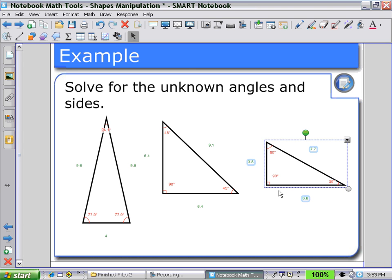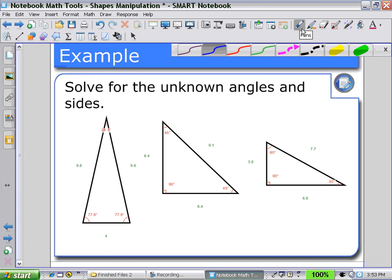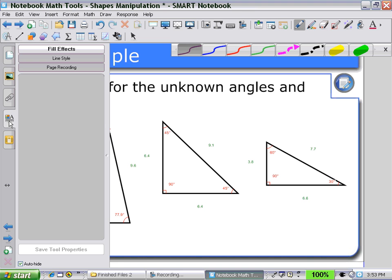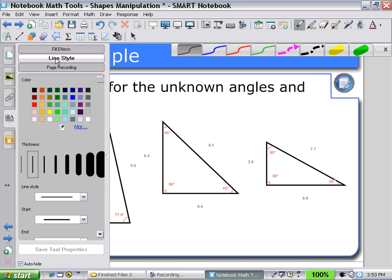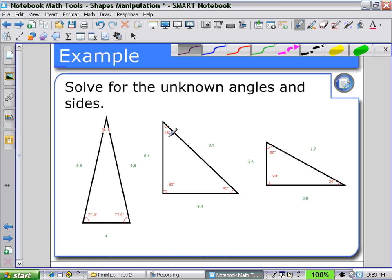And then in setting up this question, we could hide some of these by using our pen and changing its properties. We could use a line style that's a bit thicker and select a white color, and then we can start to hide some of our angles.